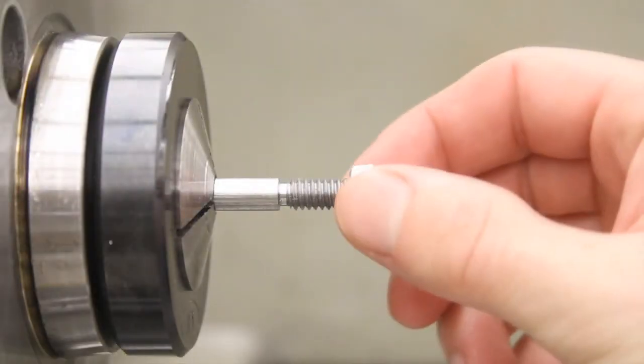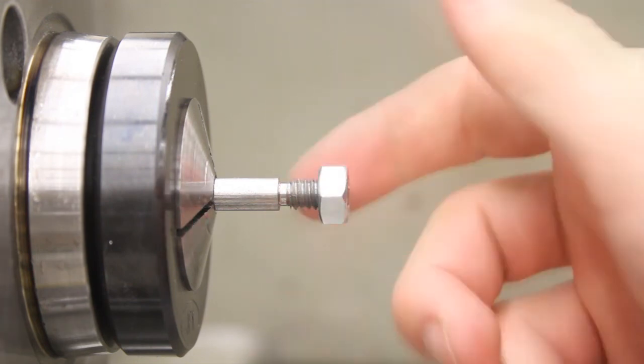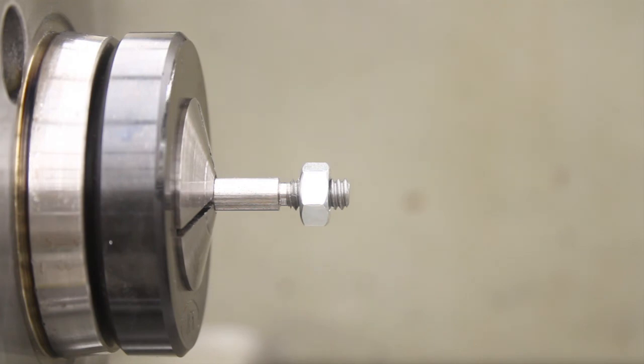Check the fit of the threads with a 1.25 nut before removing the part from the lathe. After cleaning and polishing, the punch shaft is complete.